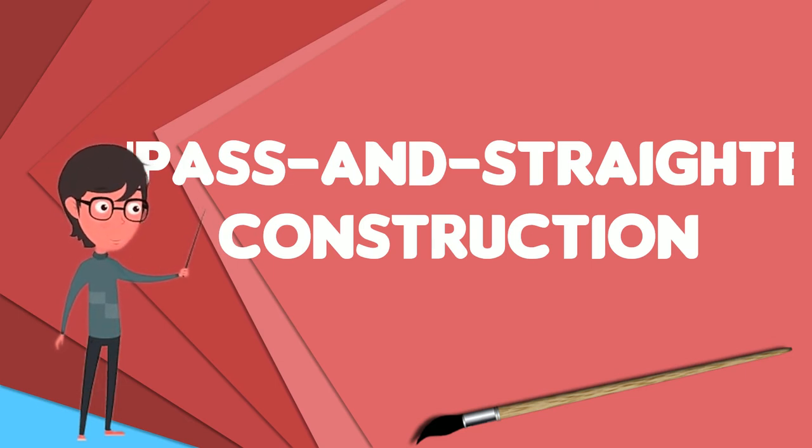Gauss showed that some polygons are constructible but that most are not. Some of the most famous straightedge and compass problems were proven impossible by Pierre Wanzel in 1837, using the mathematical theory of fields.